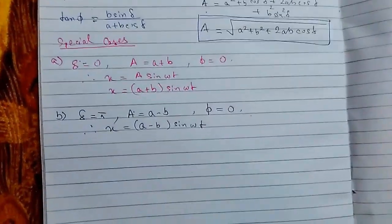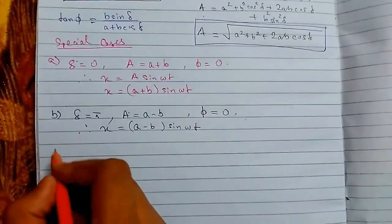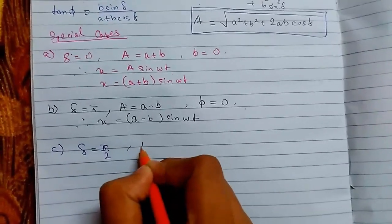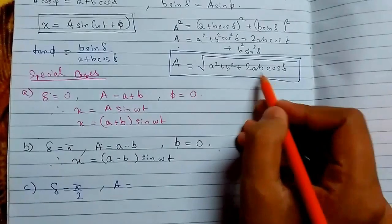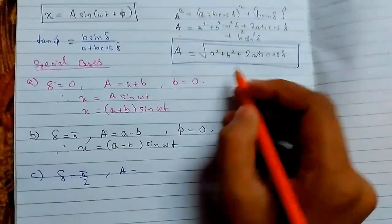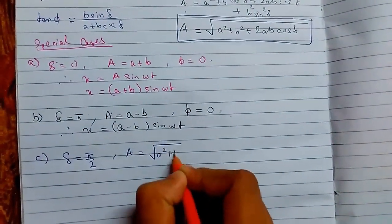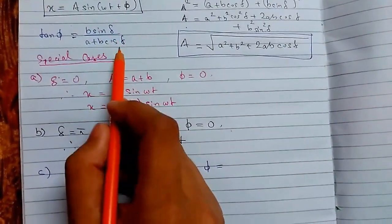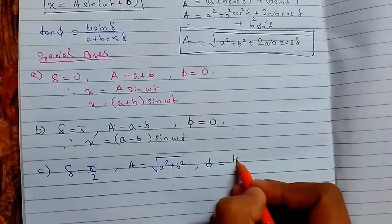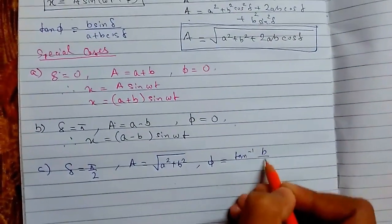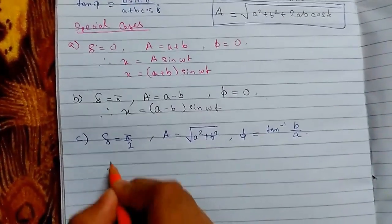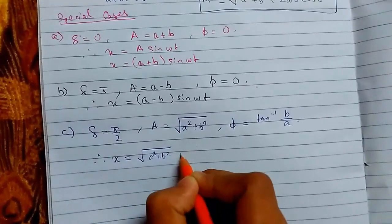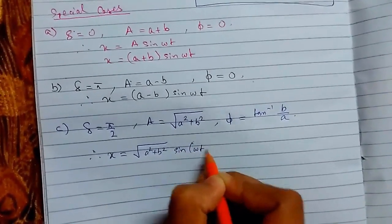Special case three: when δ equals π/2, cos(π/2) is 0, so A equals root of (a² + b²) and φ equals tan⁻¹(b/a). Therefore our equation is x equals √(a² + b²) sin(ωt + φ).